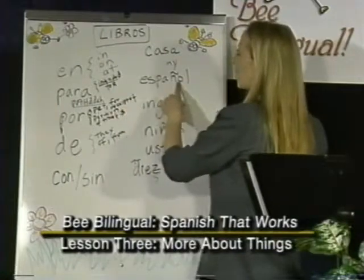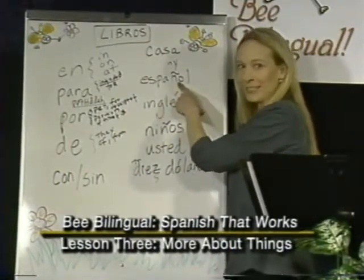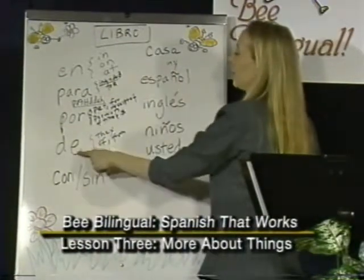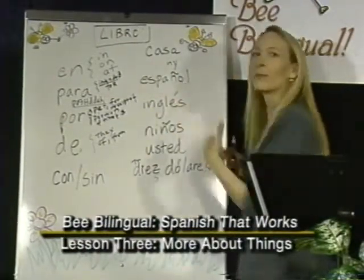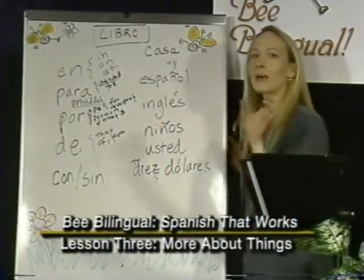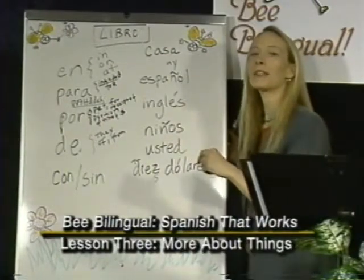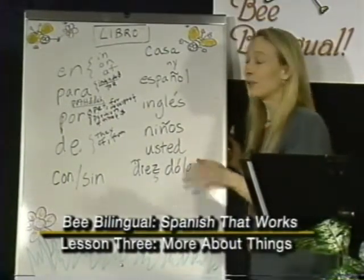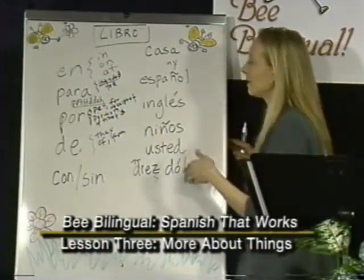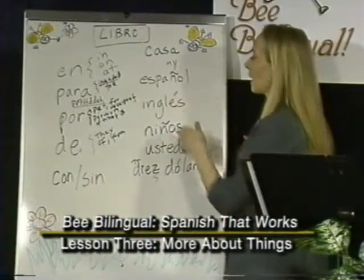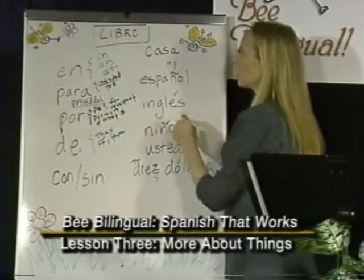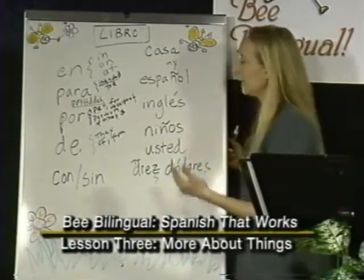So a Spanish book is not 'Español libro' — that makes no sense. It's libro de español, 'book of Spanish.' In a way it's more poetic. You can't say orange juice, you have to say 'juice of orange.' You can't say cheesecake, you have to say 'cake of cheese.' Same thing here: if you want to say English book, you must say 'book of English' — libro de inglés.